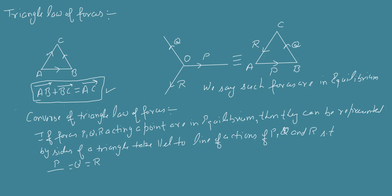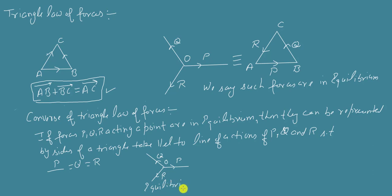For an example, if these are the forces acting at a point and are in equilibrium — say this is point P, this is Q, this is R — and the forces are in equilibrium. Then what does the law state? That it can definitely be represented by the sides of the triangle with sides taken parallel to the line of action of the forces. Now try to represent it with the sides of the triangle.